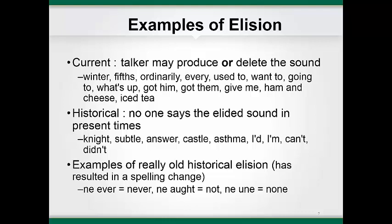Listen as I say the connected speech forms with elision compared to citation form versions, and try to identify the elided phoneme or phonemes in each word or phrase: "winner," "fifths," "ordinarily," "every," "used to," "wanna," "gonna," "sup," "got 'em," "gimme."